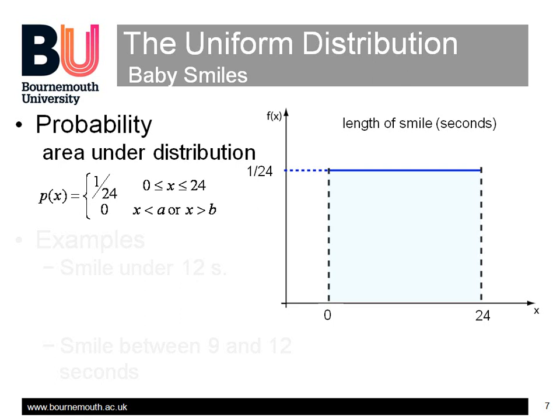It's a function which gives the probability of x taking a value in any range as the area under the graph in that range. The height of the function is 0 outside of 0 to 24 seconds, indicating 0 probability of a smile. The height between 0 and 24 is 1 over 24, so that the total area under the curve is 1 over 24 times 24, or unity, as a smile being somewhere in that range is a certainty.